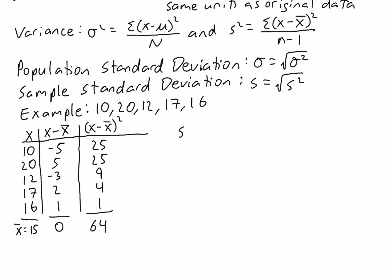So our sample variance is going to be equal to 64 divided by 5 minus 1, which is going to be equal to 16. Now our sample standard deviation is just going to be the square root of this. So s is equal to the square root of 16, which is equal to 4. Our sample standard deviation is equal to 4.